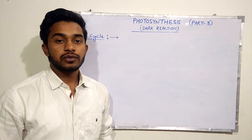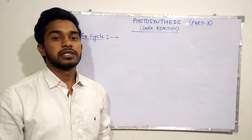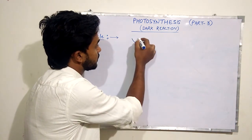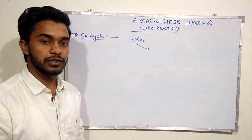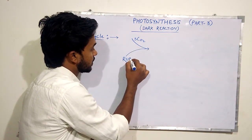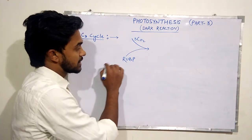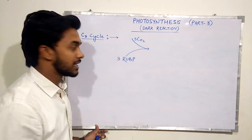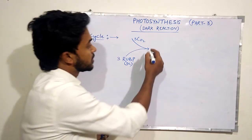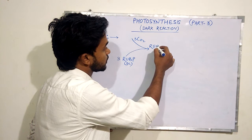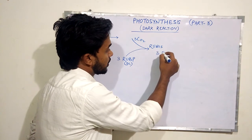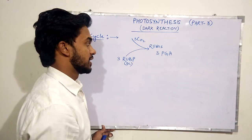The C3 cycle pathway starts with CO2, which is present in the atmosphere. Three molecules of CO2 enter the mesophyll cells. A compound named RuBP, ribulose bisphosphate, is present — three molecules of RuBP, which is a five-carbon compound. It acts as the acceptor of CO2; RuBP accepts CO2.